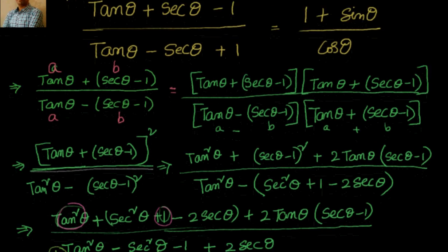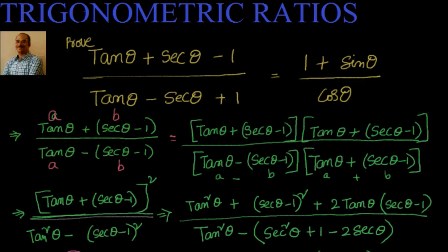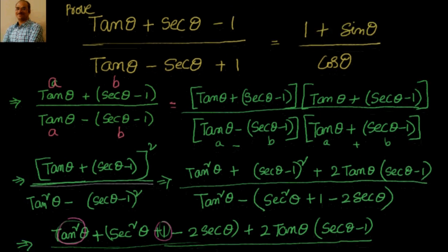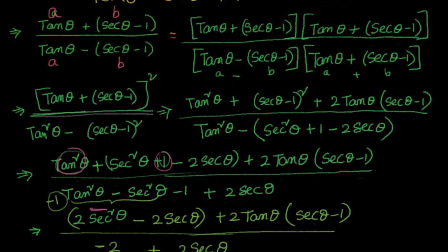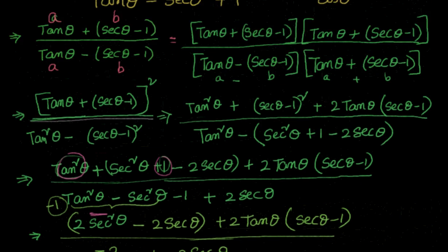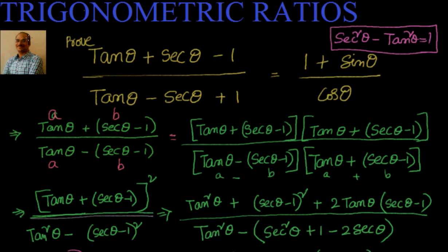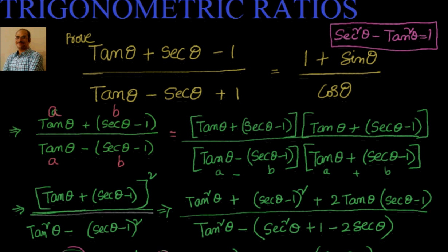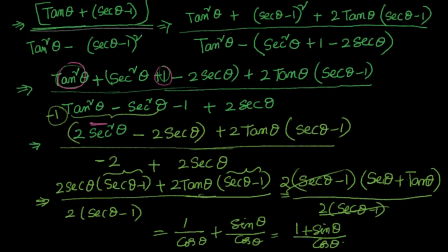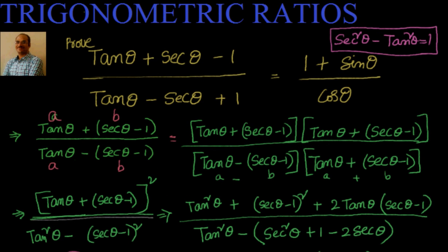So what we have done to solve this problem is: by looking at the problem, we identified it is of the form (a + b)/(a − b) and rationalized it by multiplying numerator and denominator with the numerator. We then applied the trigonometric identity sec²θ − tan²θ = 1 to simplify and arrive at the solution. See you in the next video where we will do some more problems on trigonometric identities. Thanks for visiting, bye for now.